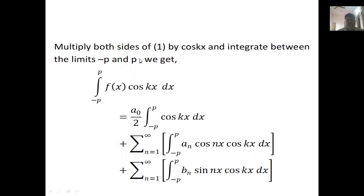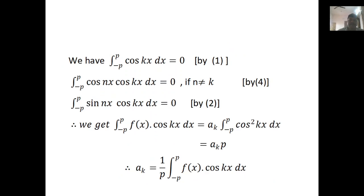Next, multiply both sides of equation 1 by cos(kx), then integrate between the limits minus P and P. After simplification, we finally get aₖ = 1/P ∫₋ₚᵖ f(x)cos(kx)dx.